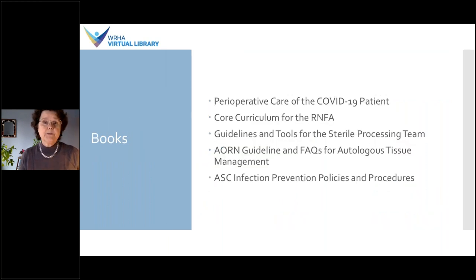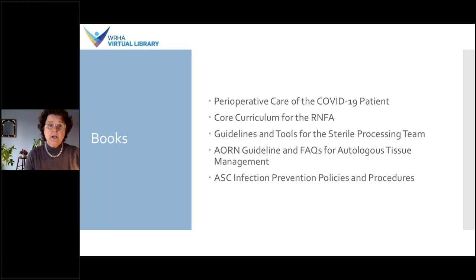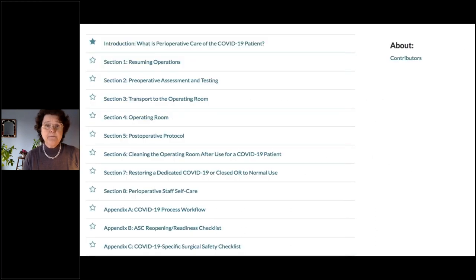The next tab is Books. Some of the books available include Perioperative Care of the COVID-19 Patient, which is a timely new addition, the Core Curriculum for the RNFA, Guidelines and Tools for the Sterile Processing Team, the AORN Guideline and FAQs for Autologous Tissue Management, and the Ambulatory Surgery Centers Infection Prevention Policy and Procedures. Looking at the COVID-19 textbook, you can see all its sections and easily open each one, and you can click to add sections to your favorites.